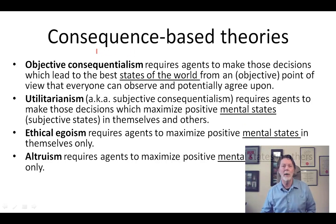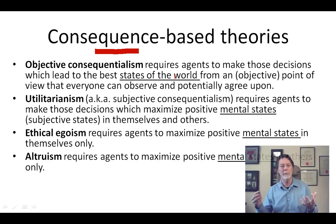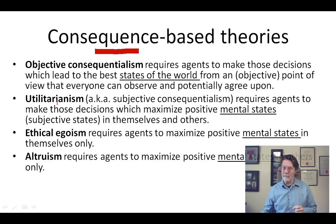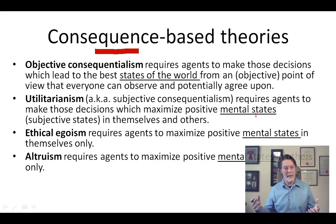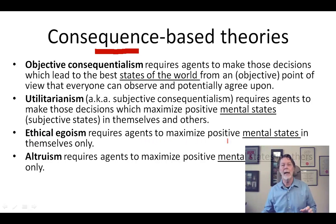We have various types of consequence-based ethical theories. The objective type of consequentialism tells you to look at the states of the world, which you can observe from an objective point of view, and make the decisions which lead to the best states of the world. Utilitarian consequentialism — subjective as opposed to objective — requires agents to make the decisions which cause maximum positive mental states, like happiness or pleasure, or satisfied preferences in themselves and others. These contrast with ethical egoism, which we looked at in the last chapter, which asks agents to maximize the positive mental states, or self-interest, in themselves only.